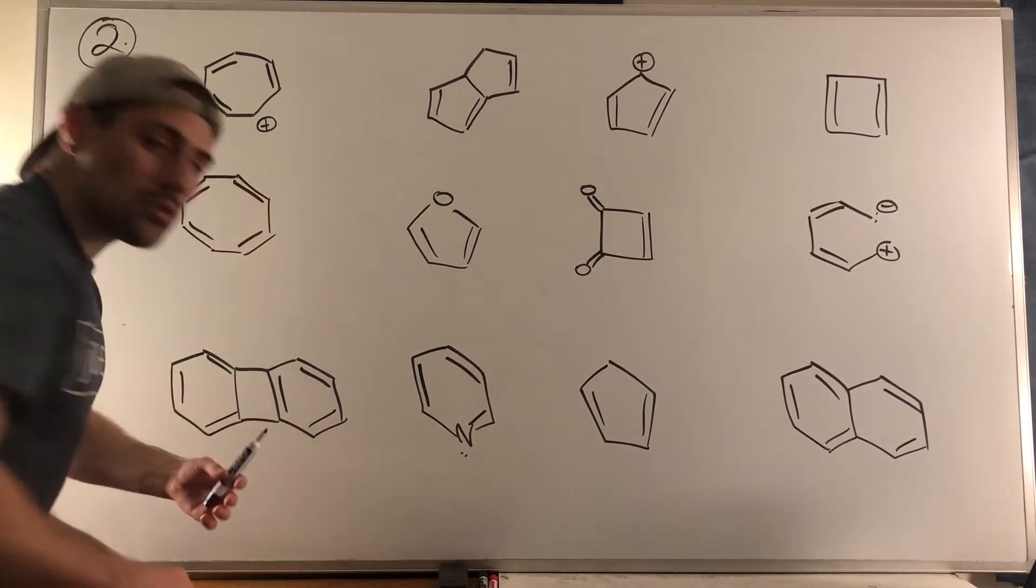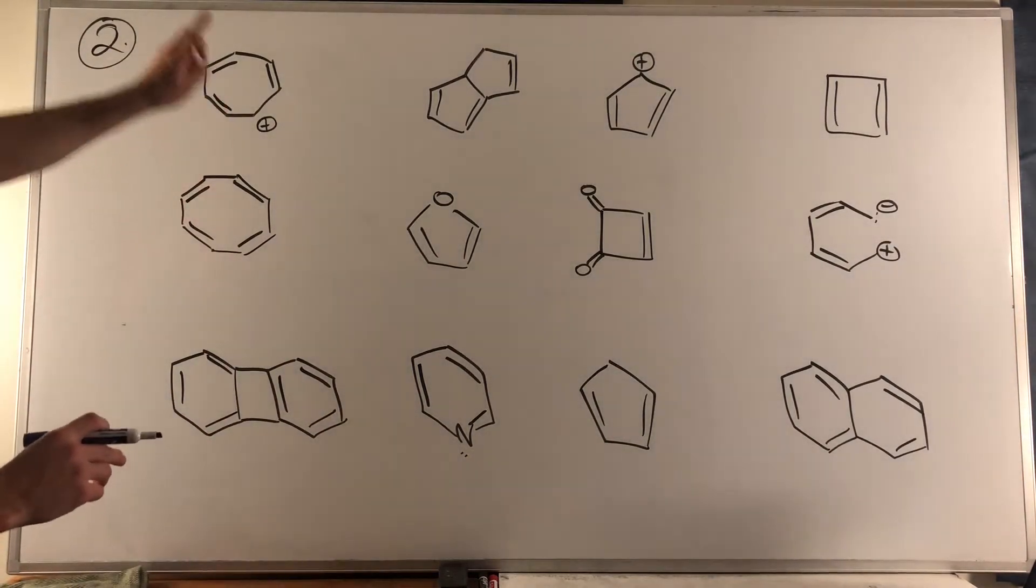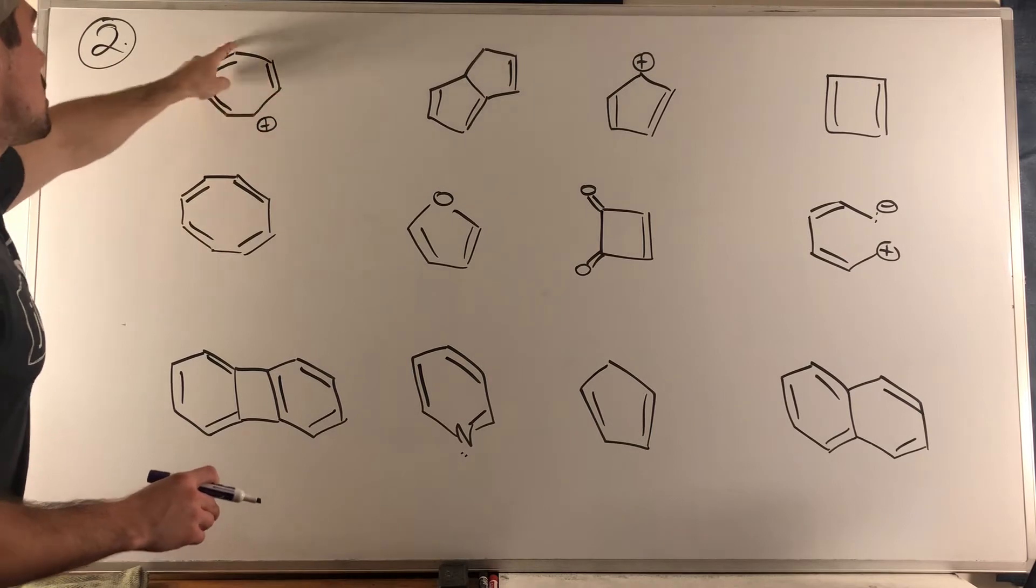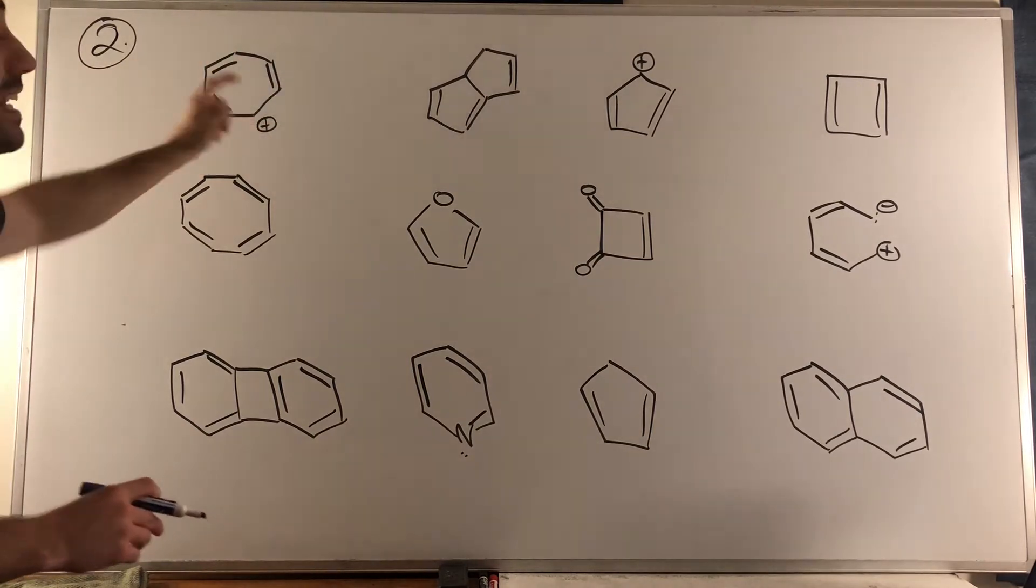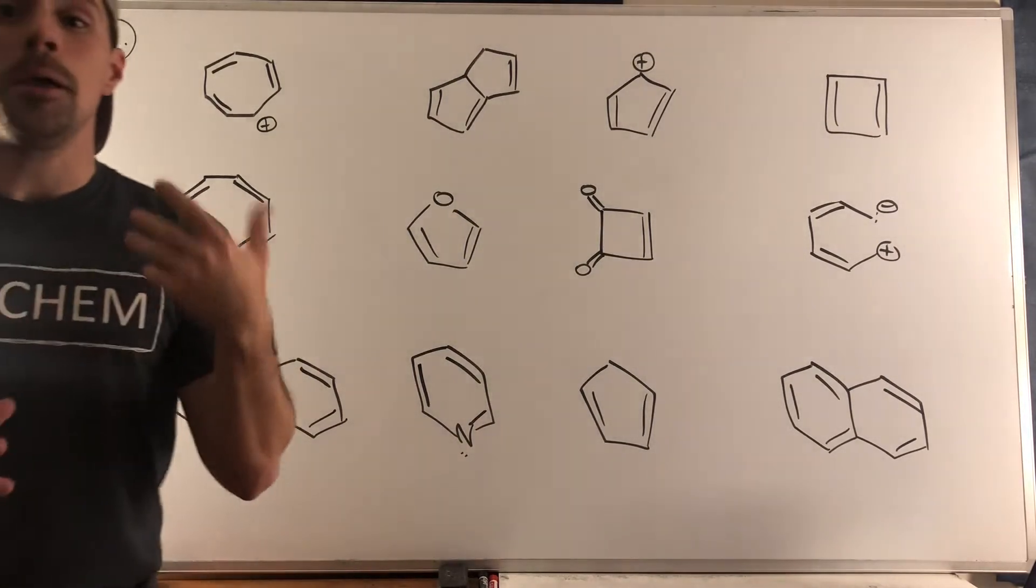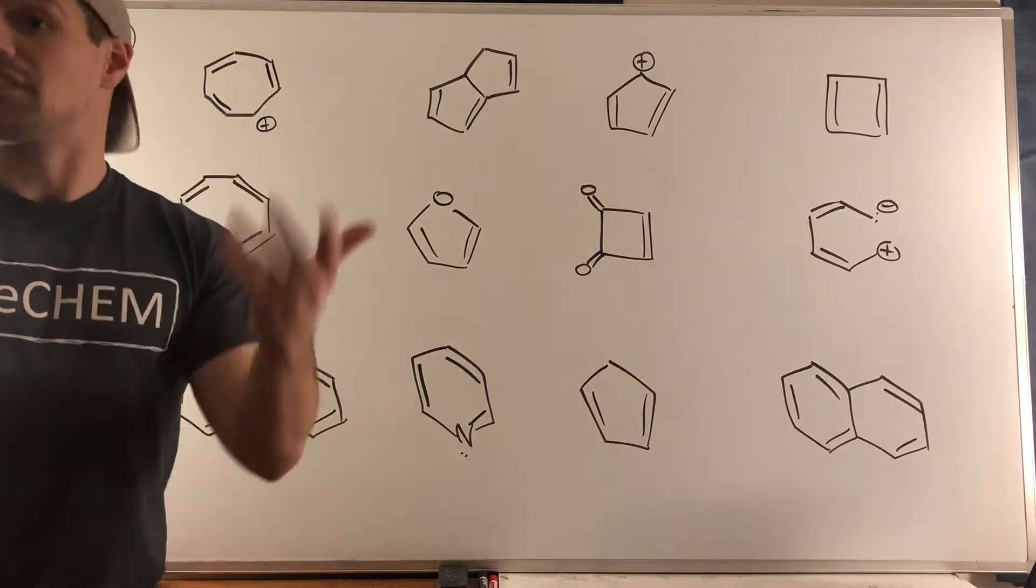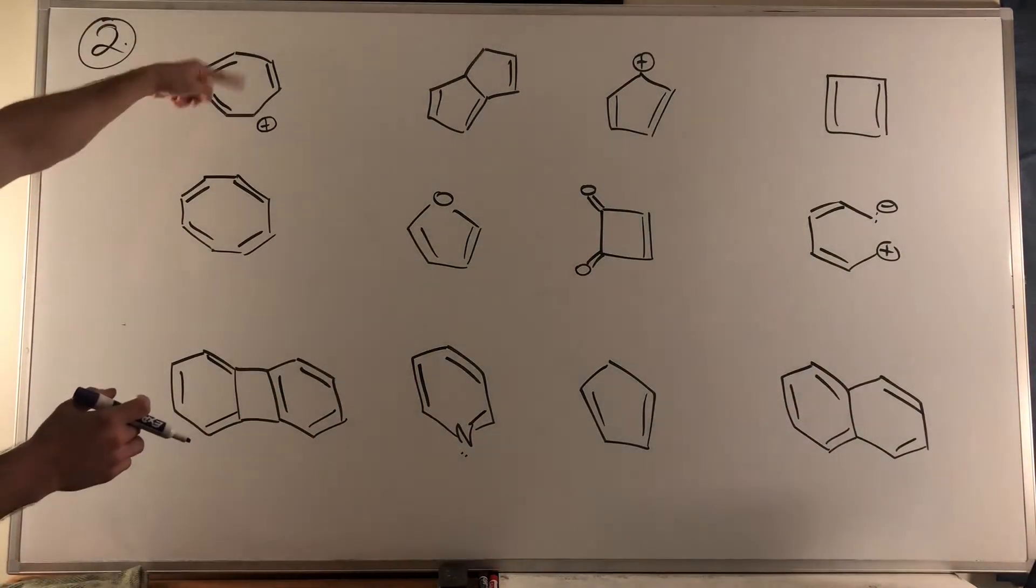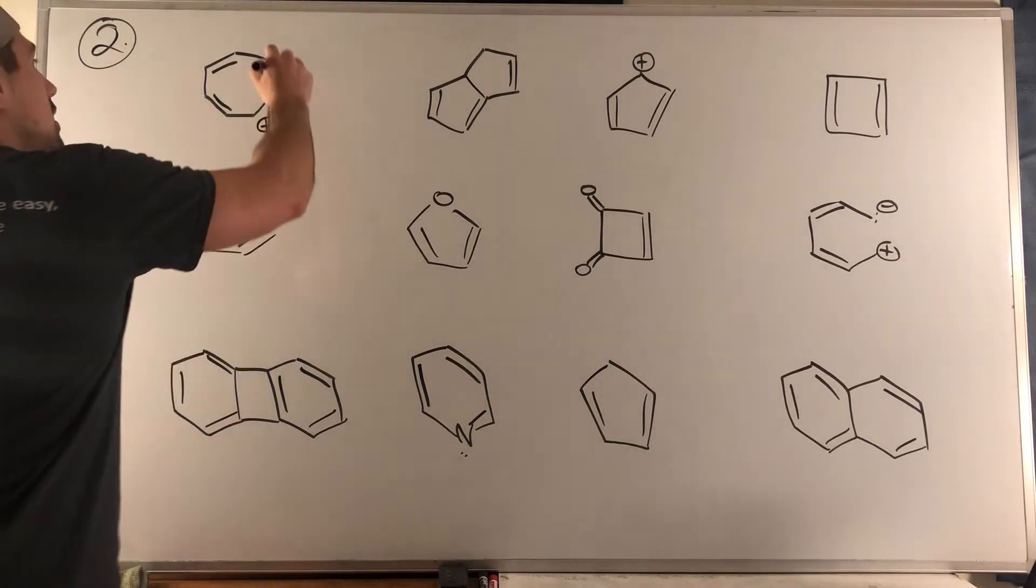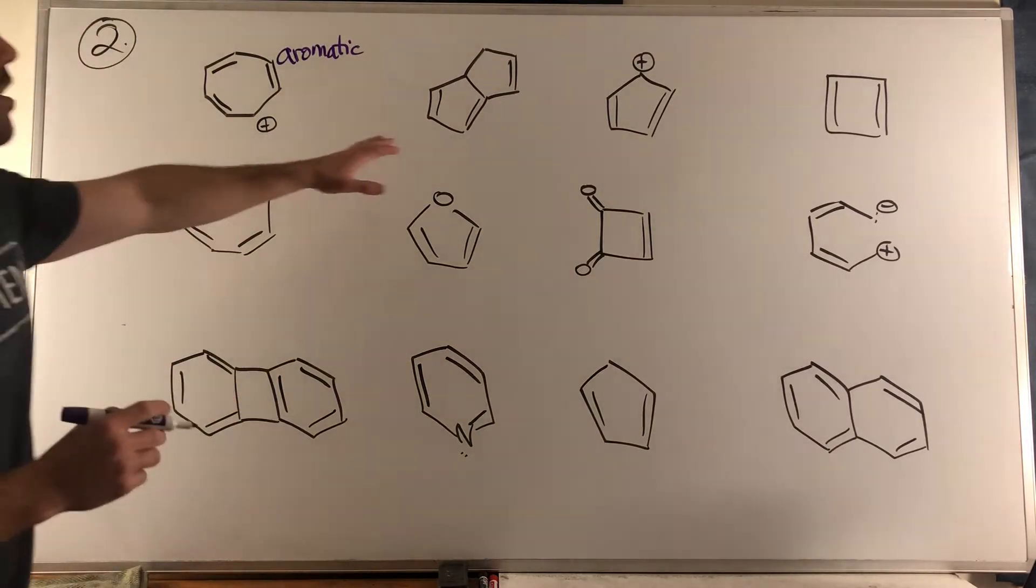If we take a look here, we obviously have a ring. We have sp2, sp2, sp2, sp2, sp2, sp2, sp2, and sp2—that carbocation is sp2 hybridized, it just has an empty p orbital. We have ring, flat, and conjugated, and we have 6 pi electrons because 2, 4, 6. This is in fact aromatic, follows all the criteria.